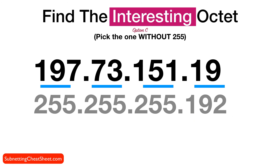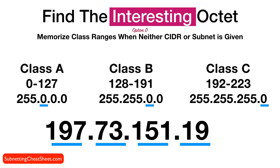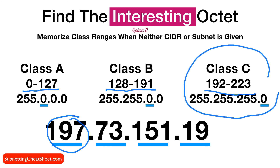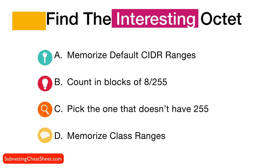The last way to figure out the interesting octet is to memorize the class address ranges. Class A is from 0 to 127, Class B is 128 through 191, and Class C is 192 to 223. Based on this method, you look at the first octet — if it's 197, we know 197 falls within the Class C range, so the fourth octet is the interesting octet.